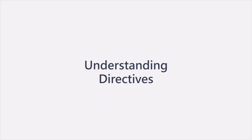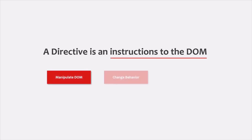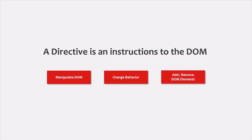Another key feature of Angular is its directives. In this lecture, we will learn what is a directive and what is its importance. Basically, a directive is an instruction to the DOM. We use directives to manipulate the DOM — we tell Angular how a DOM element should behave or look, and which DOM elements to add or not add to the web page. You can change a DOM element's appearance, behavior, or layout using directives. They simply help you extend HTML in some way.